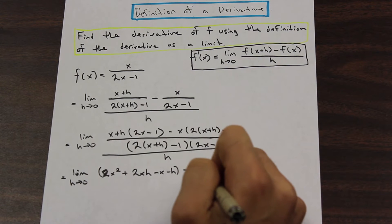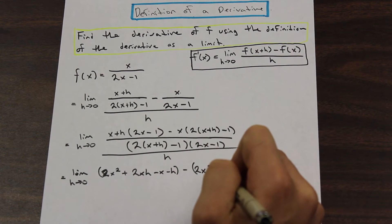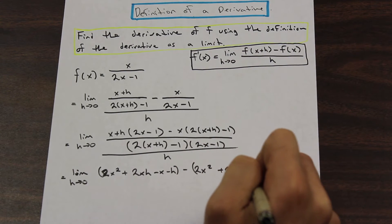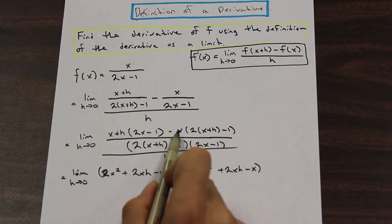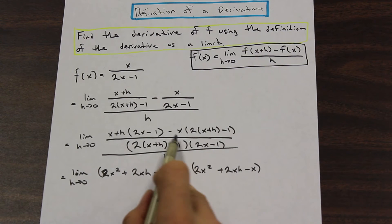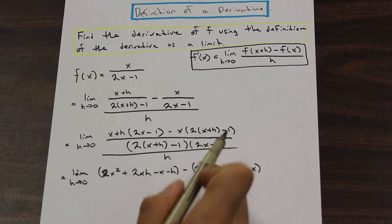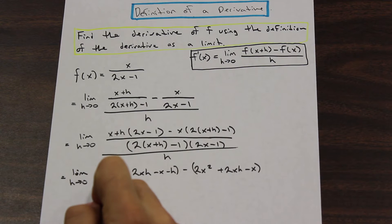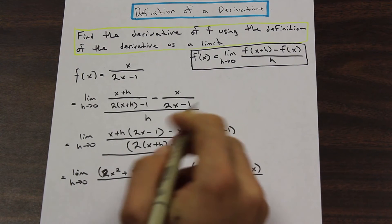Minus 2x squared plus 2xh minus x. Don't forget this negative here. That negative applies to the entire term. Don't make that mistake of just applying it to the first term because that's going to be wrong. You're going to get a 0. We don't want to see any 0s.